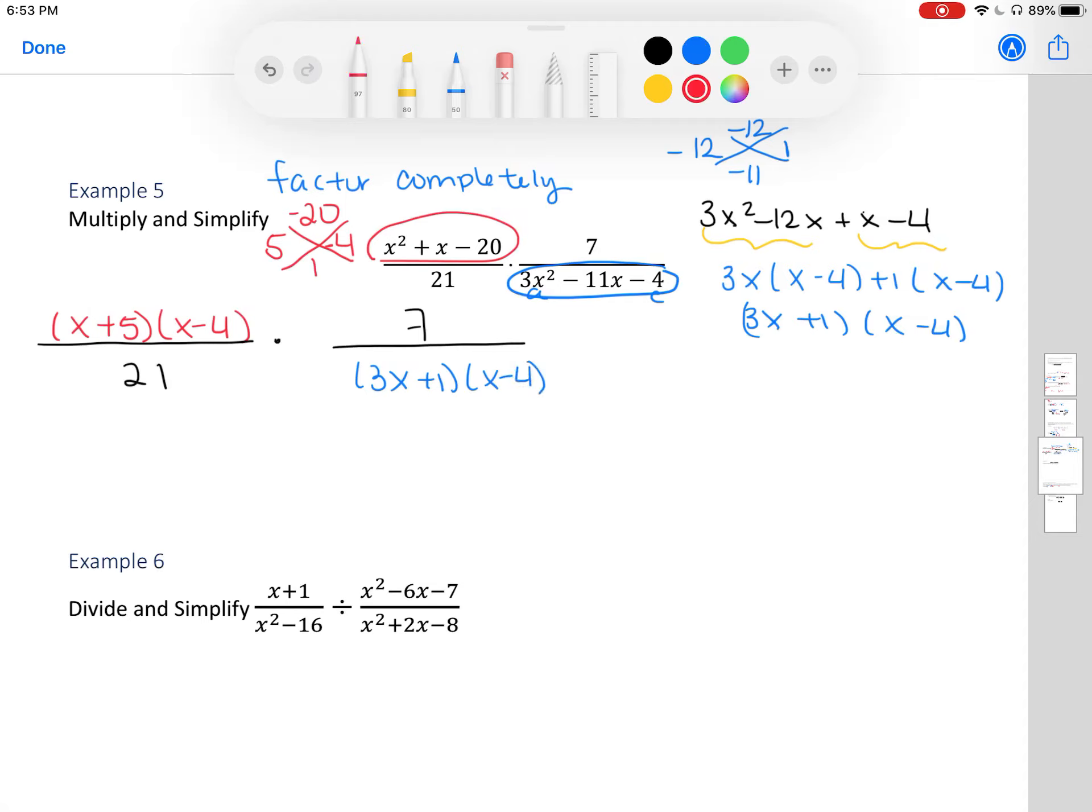Now according to what we learned, to multiply polynomials or to multiply fractions, we just multiply across. So let's go ahead and do that. x plus 5 times x minus 4 times x minus 4 in the numerator, and in the denominator 21 times the factored expression.